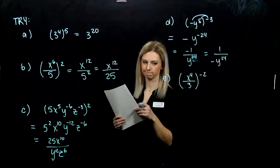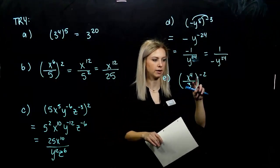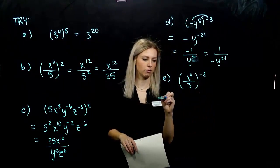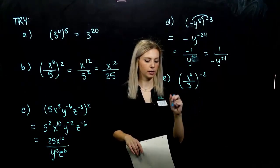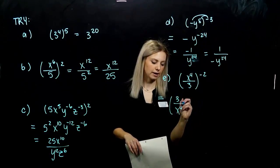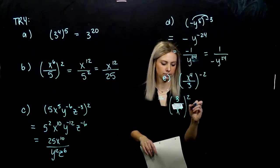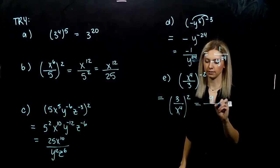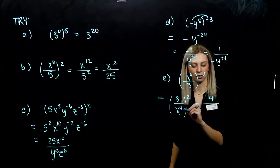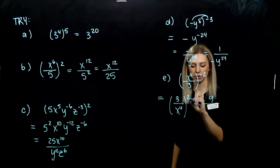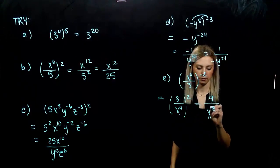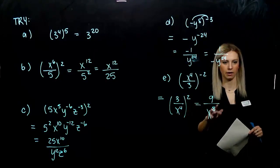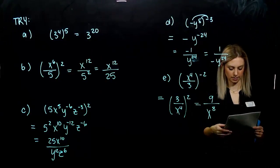For part e, I have a negative on the outside and a fraction on the inside, so I'll take the quick route: look at the reciprocal of the inside, flip it upside down, and make the power positive. Then distributing normally: 3 squared gives 9, and x to the 4th raised to the 2nd — raising a power to a power, we multiply — gives x to the 8th. And if you distributed the negative 2 into each term instead, you get the same answer either way.